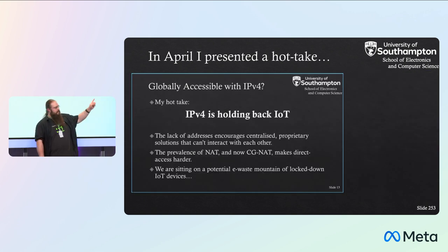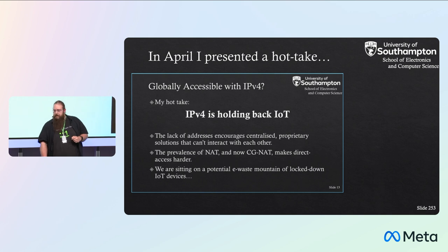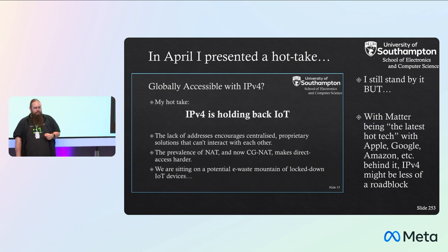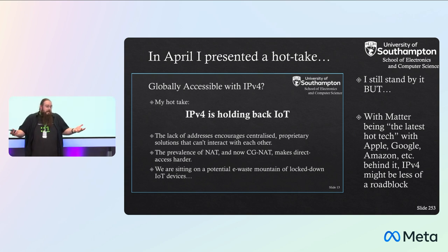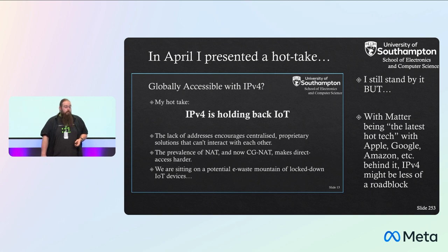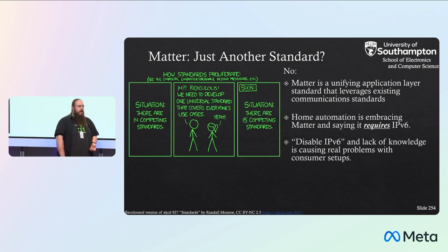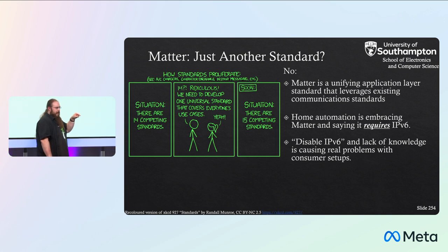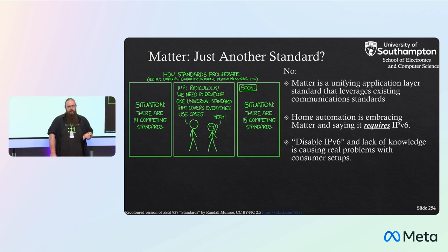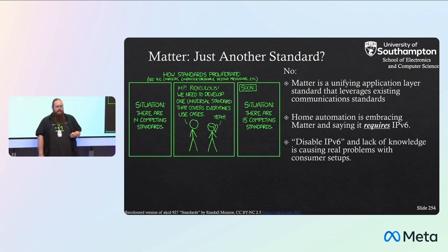In April I presented that IPv4 was holding back IoT — I pretty much still stand by that. But with it being the latest hot tech and with Apple, Google, Amazon, and Samsung all being behind this, IPv6 and IoT could be steamrolling IPv4 out of the way — might not be such a roadblock. At the end of the day, Matter is here. It's starting to get into the hands of users. Going from a standard in 2019 to actual devices being available in people's homes in 2023 is shockingly fast in the grand scheme of things. It's getting a lot of momentum. It's not just another standard — it's being used and it's being embraced. And that's all I've got for you.